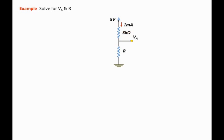The first part of the problem is to solve for Va, where Va is the voltage at this node. To solve for Va, we know the voltage at the top end of the resistor, that is 5 volts, and we can evaluate the voltage drop across the resistor, that is the current, which is 1 milliamp, times the resistor value, which is 3 kilo ohms.